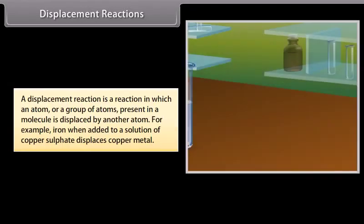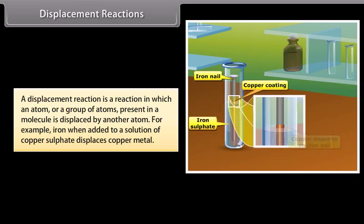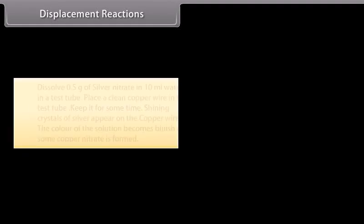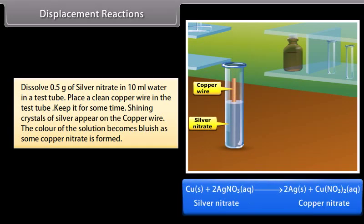Displacement reactions: A displacement reaction is one in which an atom or group of atoms present in a molecule is displaced by another atom. For example, iron, when added to a solution of copper sulfate, displaces copper metal. Activity: Dissolve 0.5 grams of silver nitrate in 10 ml water in a test tube and place a clean copper wire in it.